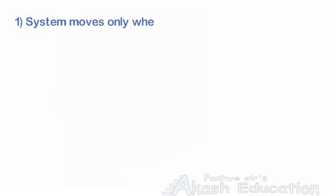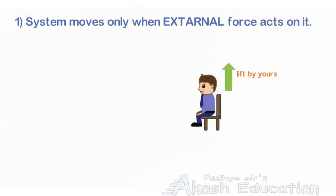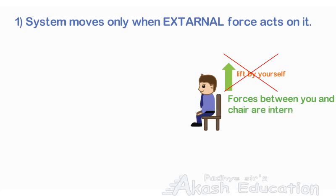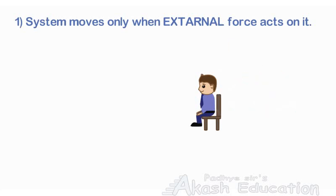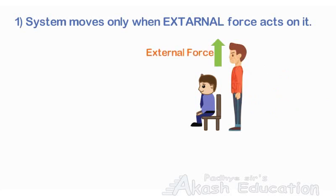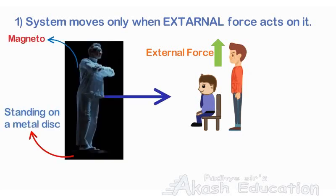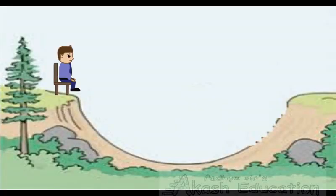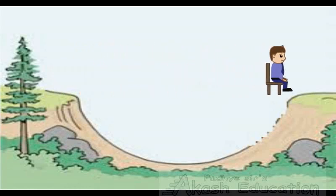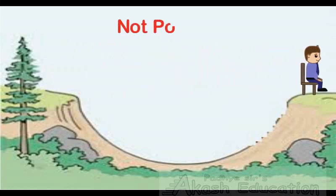A system can move only when an external force acts on it. If you are sitting on a chair, you will not be able to lift the chair by yourself, because the force between you and the chair will be internal. But any other person standing near you can lift your chair, as he is applying external force on the chair. Similarly, in the original scene, Magneto stands on the metal plate and moves in the forward direction. This is like sitting on a chair and trying to cross a valley without any external force, which is not possible.